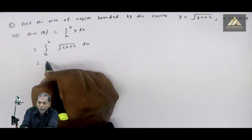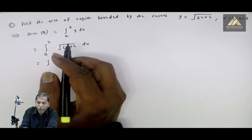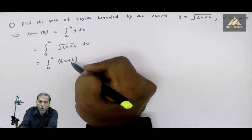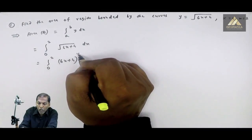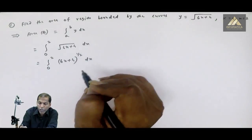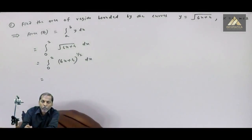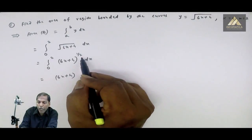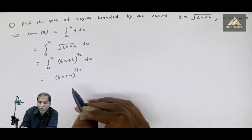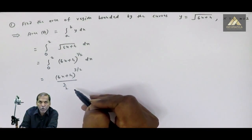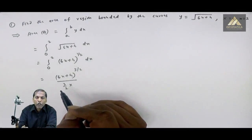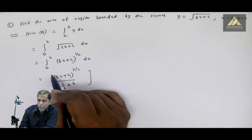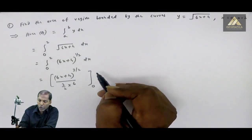Square root का integration हम power rule से निकालते हैं. इसे हम simply ऐसे लिख सकते हैं: integral 0 to 2, (6x plus 4) raised to 1/2 into dx. अब हम इसका integration निकालते हैं by using power rule. 6x plus 4 same रहेगा, power में 1/2 है, वहाँ पे हम 1 plus करेंगे तो मिला 3/2, upon 3/2 into x का coefficient. x का coefficient है 6, उसके बाद bracket complete with limit 0 to 2.